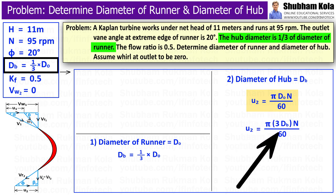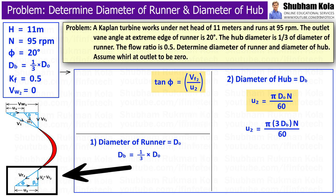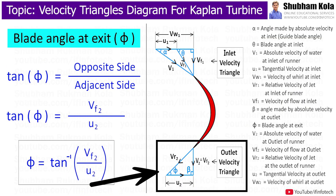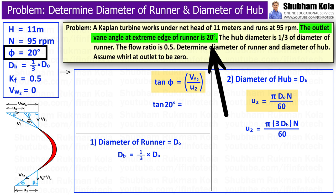So here we substitute D₀ in terms of Dh. And here we only need to calculate u₂ and it can be calculated from trigonometric ratio considering outlet velocity angle. So, as we have studied in previous video, that is tan φ equals Vf divided by u₂, where angle φ is the blade angle or vane angle at outlet which is given in question as 20 degrees.